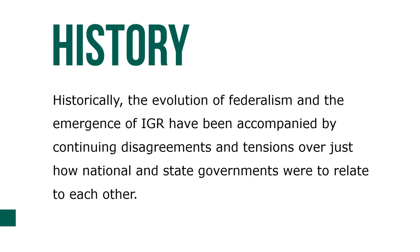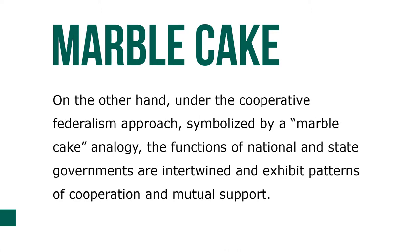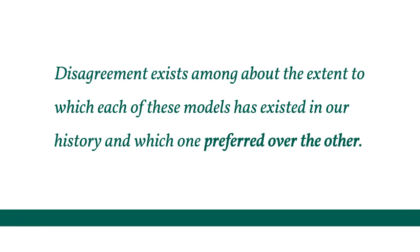Historically, the evolution of federalism and the emergence of IGR have been accompanied by continual disagreements and tensions over how national and state governments were to relate to one another. Under the dual federalism approach, symbolized by a layer cake analogy, the functions of national and state governments are separate and distinct. Under the cooperative federalism approach, symbolized by a marble cake analogy, the functions of national and state governments are intertwined and exhibit patterns of cooperation and mutual support. Disagreement exists about the extent to which each model has existed in history and which is preferred.